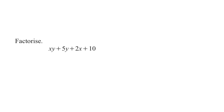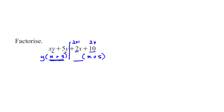Question 8: Four terms are given and we have to factorize. We break it into two parts. y is common in the first part — remove y to get (x + 5). When factorizing four terms, if one bracket is (x + 5), the other bracket is also (x + 5). Looking at 2 and 10: 2 × 1 = 2 and 2 × 5 = 10, so 2 is common. The final factorized form is (x + 5)(y + 2).